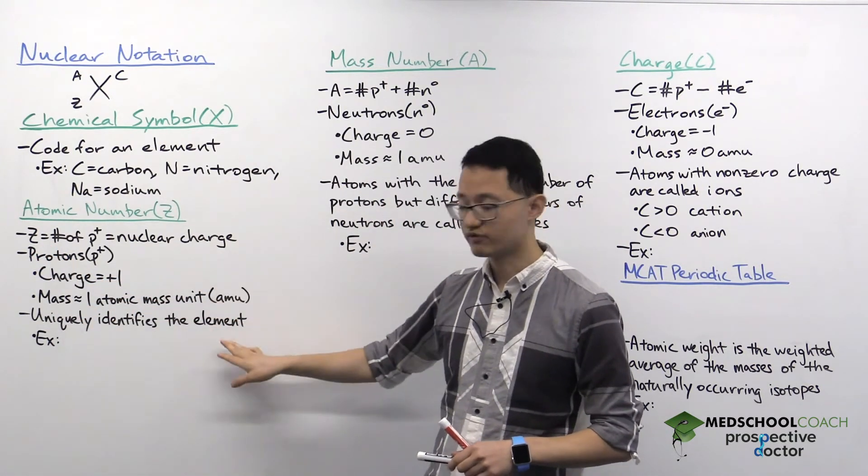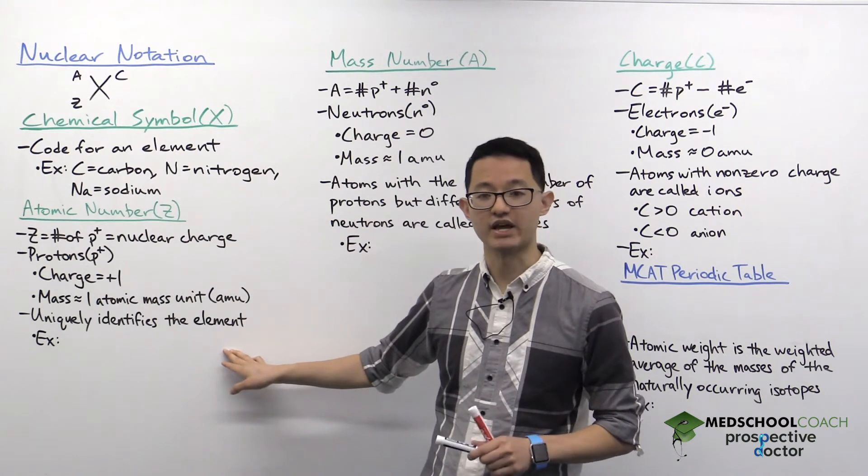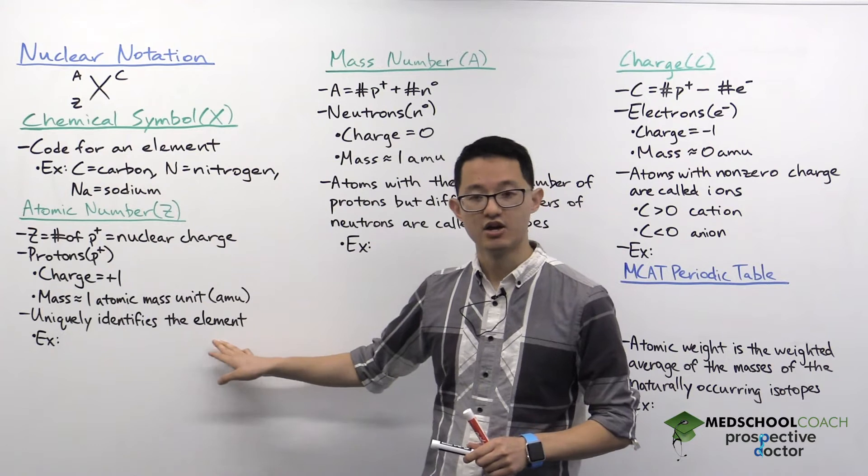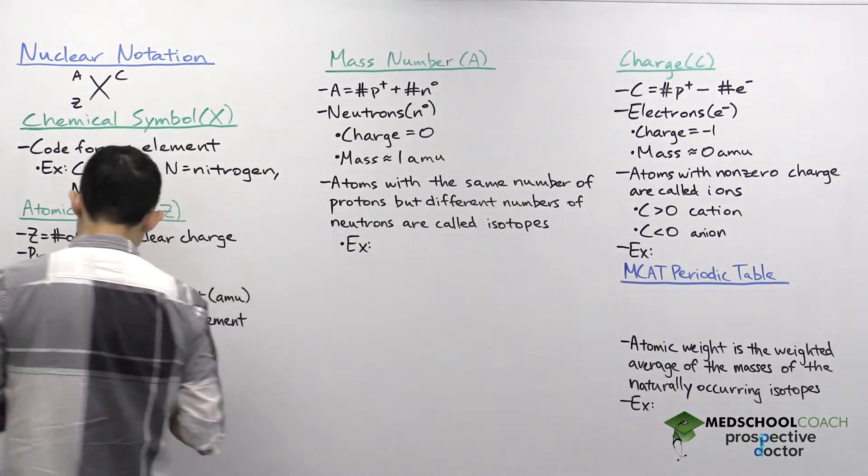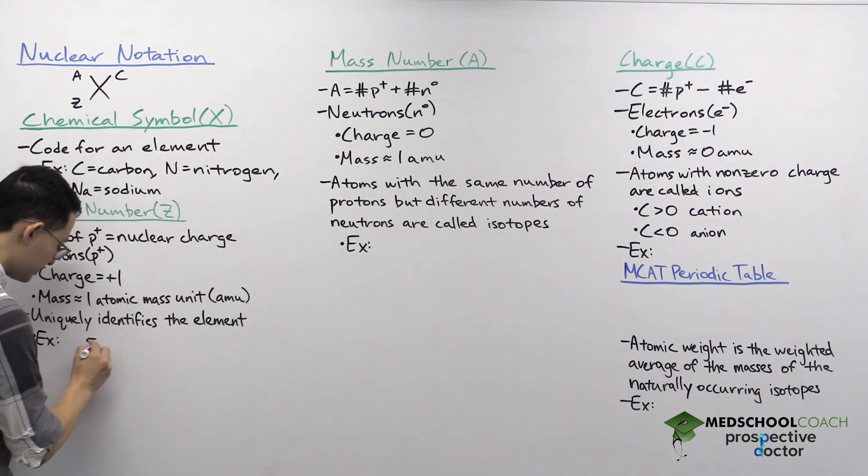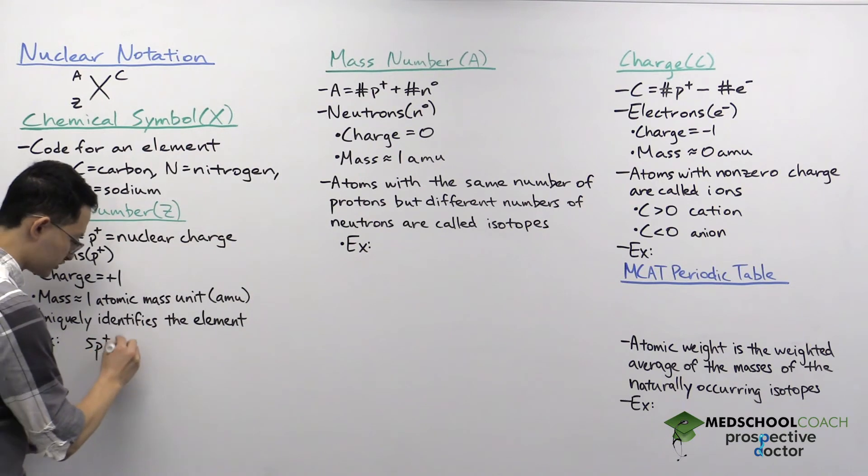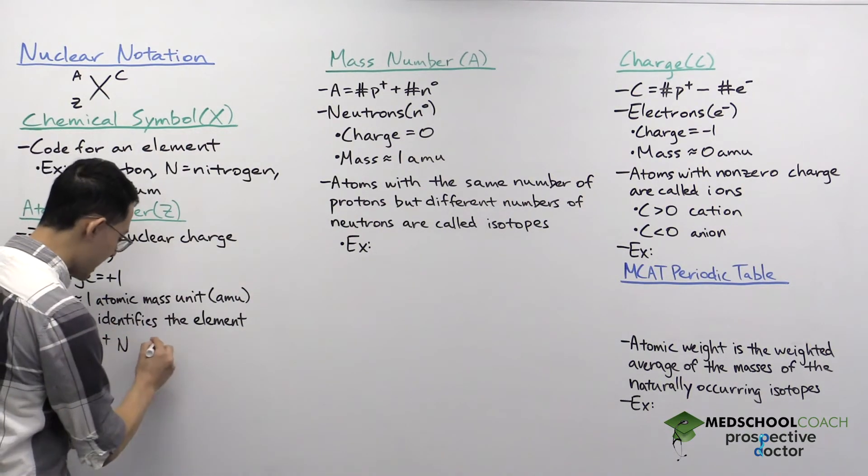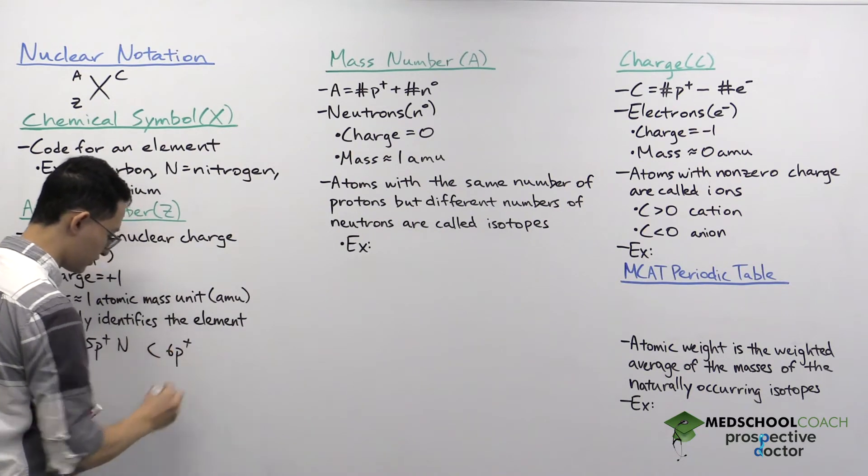Now what's very important for the atomic number for the MCAT is that it uniquely identifies the element. What I mean by that is any atom with five protons has to be a nitrogen atom, and at the same time, any carbon atom has to have six protons.